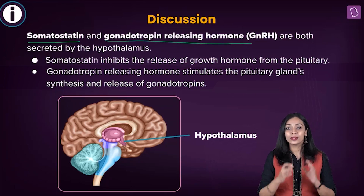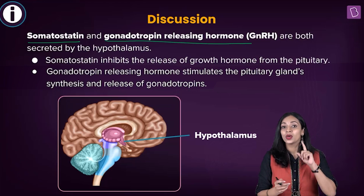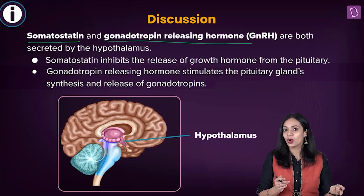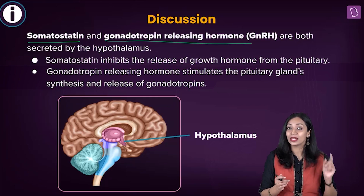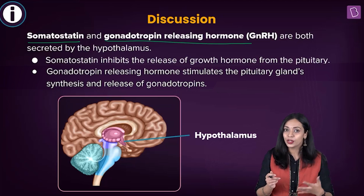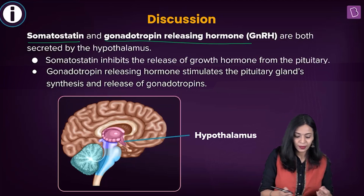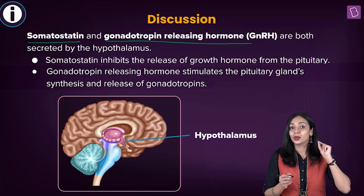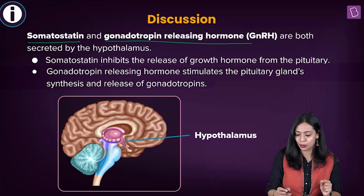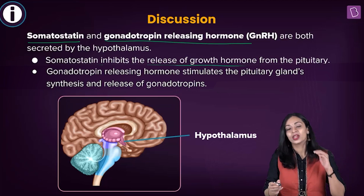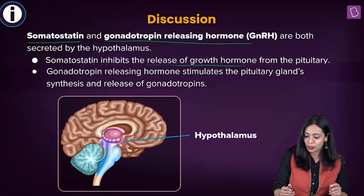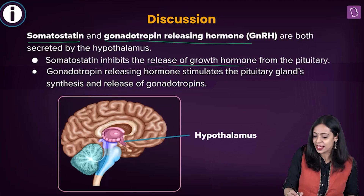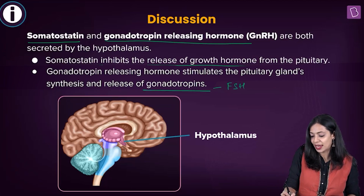Both somatostatin and GnRH are released by the hypothalamus and act on the anterior lobe of the pituitary. One is a releasing hormone that stimulates the anterior pituitary to produce a hormone, while the other is an inhibiting hormone. Somatostatin is the inhibiting hormone — it inhibits the anterior pituitary from releasing growth hormone, whereas gonadotropin releasing hormone stimulates the anterior pituitary to release and synthesize gonadotropins such as FSH and LH.